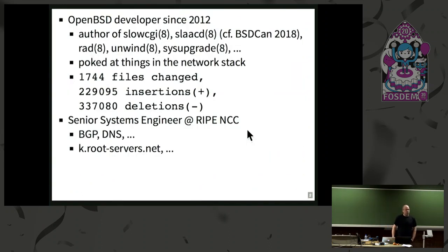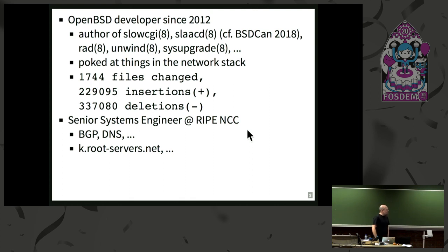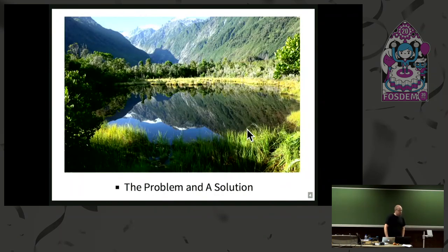I'm Florian. I'm an OpenBSD developer since 2012, where I mostly specialize on privileged separated network daemons. I've also poked at things in the network stack, and since this week, my total contributions on OpenBSD have been a net negative — I deleted more lines than I added. I won't talk about this because that's Phil Geff and Andre's nightmares. For work, I'm a senior systems engineer at the RIPE NCC, part of the team that runs the K-root name server, which basically means we figure out how to answer NX domain real fast.